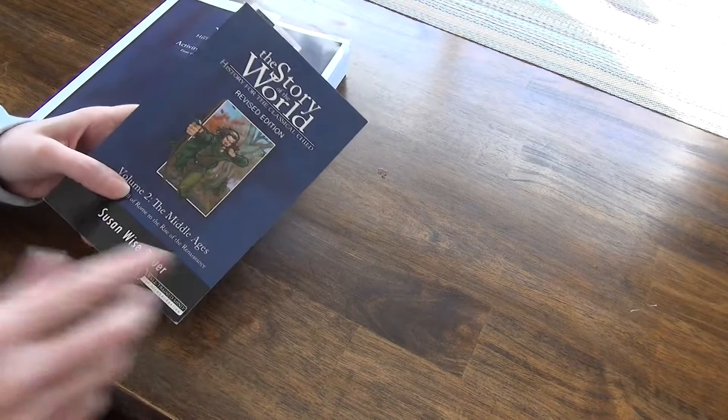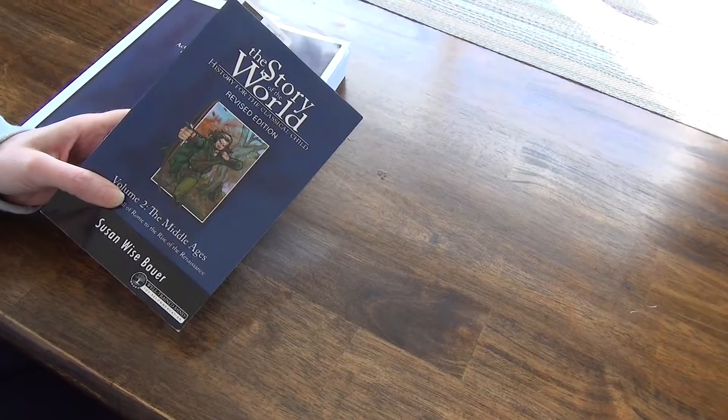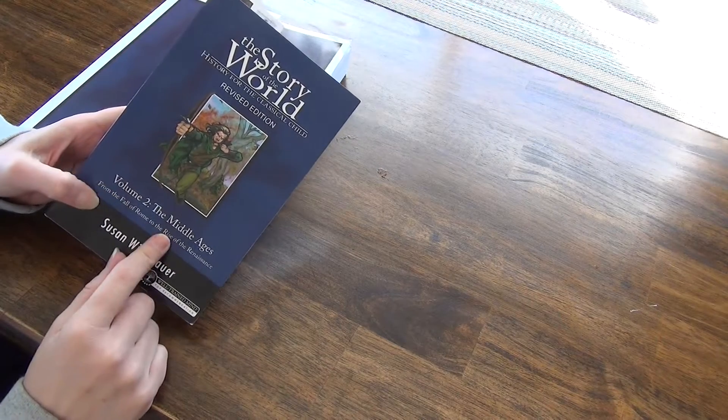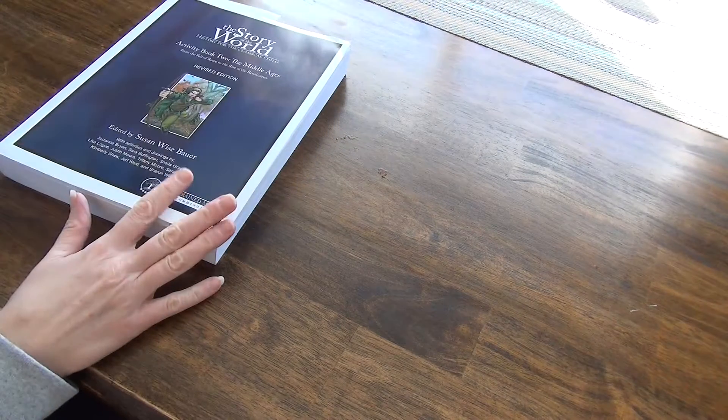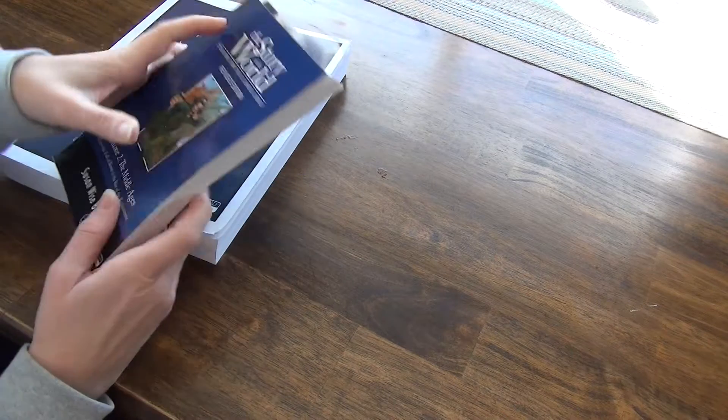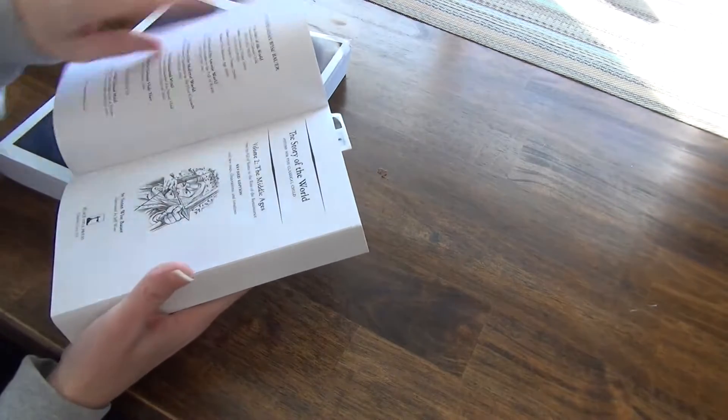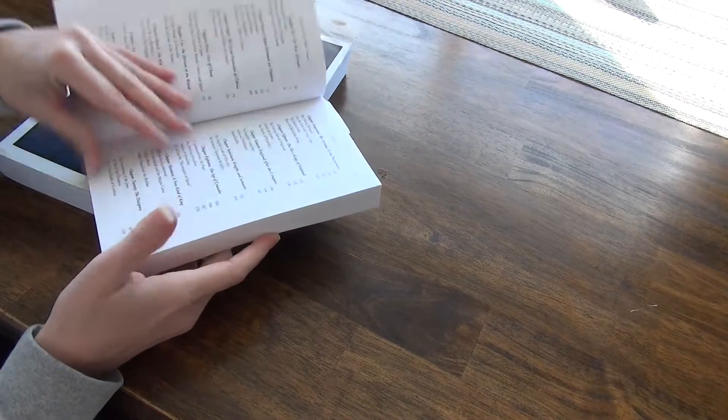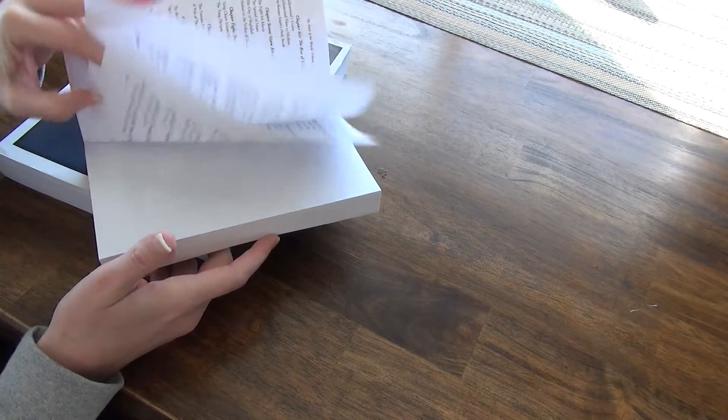So we have used Story of the World for quite some time now. We are on level two, the Middle Ages. And originally, I did not purchase the activity book. However, we are on chapter 14 of 42.